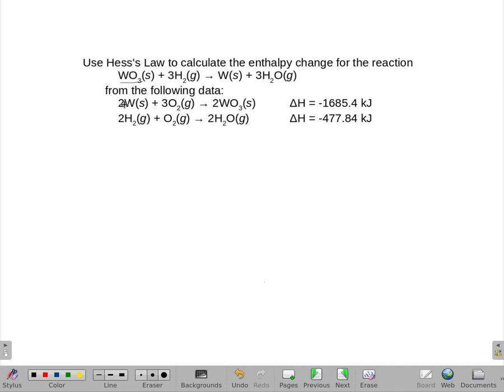All right, so the first one I'm looking for is the tungsten oxide. I'm going to call this equation one. And I see that I need to take that equation one and multiply all the coefficients by one half, so I get just one tungsten trioxide. I also need to reverse it.